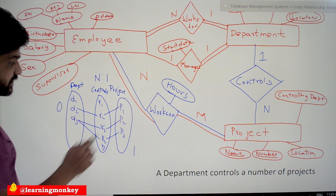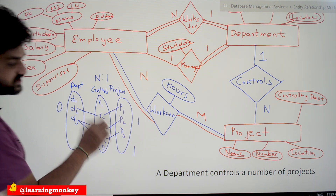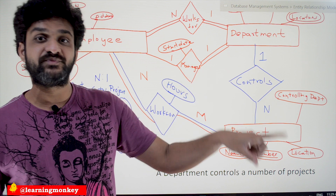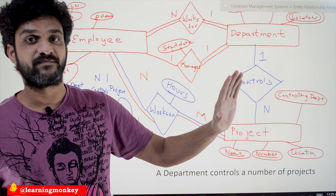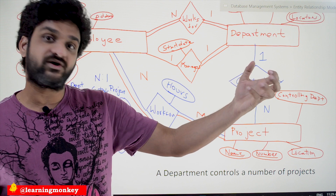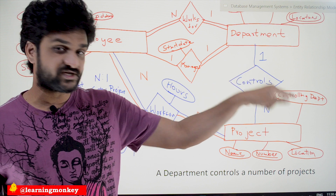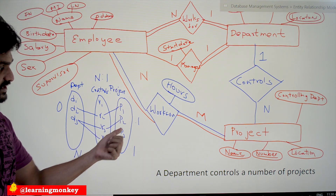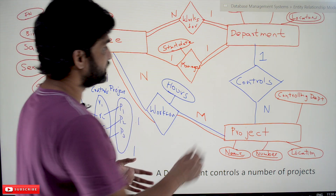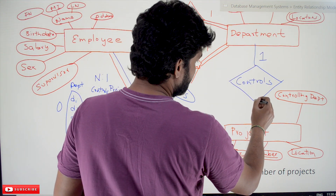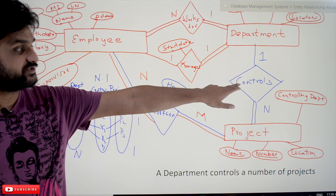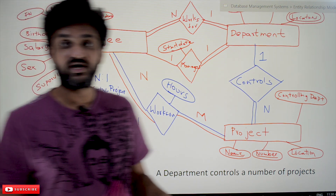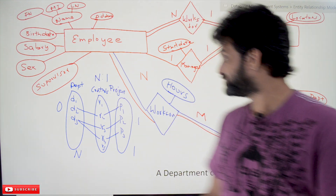For projects, the minimum and maximum participation are both 1, because every project must be under the control of exactly one department — you cannot have a project without a controlling department. So projects have full participation with respect to the 'controls' relationship type. This is all about the one-to-many relationship on the 'controls' relationship type.